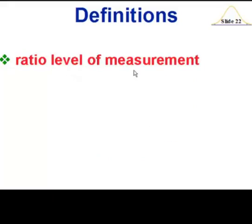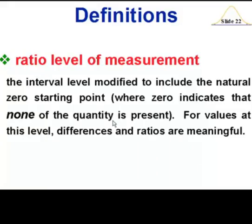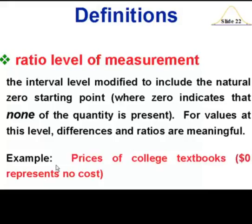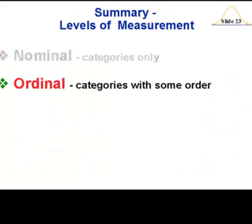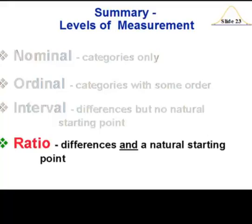That brings us to the last type of data — ratio level of measurement. That involves measures where there is a meaningful zero starting point. For example, if you consider your age, I can be twice as old as somebody. Prices of college textbooks — zero represents no cost. If something is twice the price of another item, it's twice as expensive. So the different levels of measurement are nominal, ordinal, interval, and ratio.